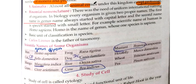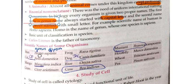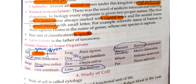Now, binomial nomenclature: the first name is always the genus, written with a capital letter. The second name is the species, written in small letters. For example, Homo sapiens — Homo is the genus and sapiens is the species. The basic unit of classification is species, as established by Carolus Linnaeus, the father of taxonomy.